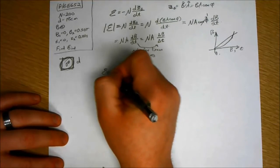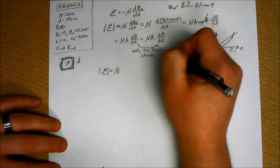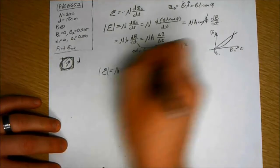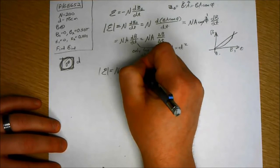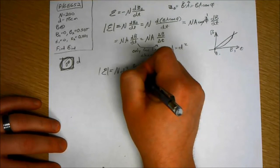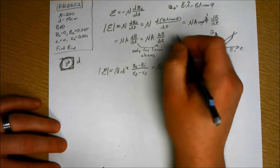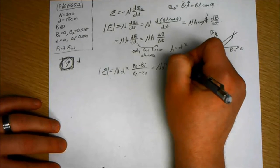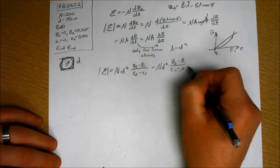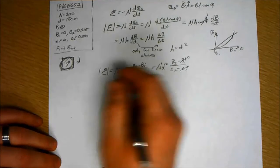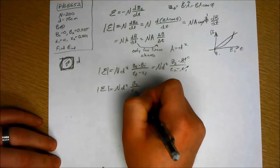So the induced EMF, I'll put the absolute value of what it is. N A now, A equals d squared. It's a square loop. Delta B is B final minus B initial over T final minus T initial. And I should have used final and initial, but I didn't. So I'll write that B2 minus B1 over T2 minus T1. These things are both zero. So N d squared times B2 over T2.